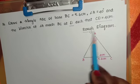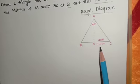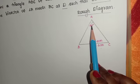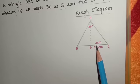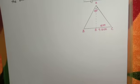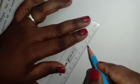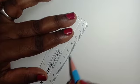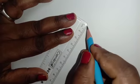First rough diagram: BC is 5.6 centimeter, angle A 40 degree and CD is equal to 4 centimeter. First, 5.6 centimeter, one line segment.